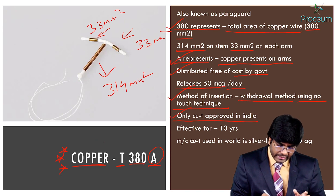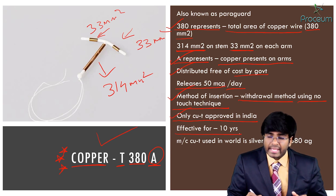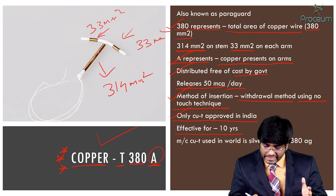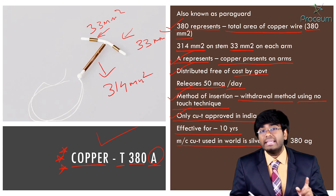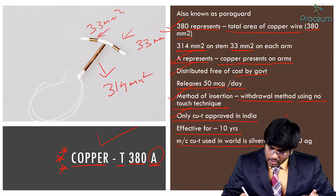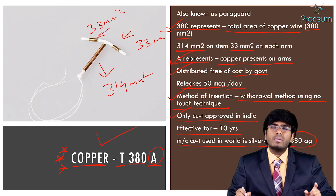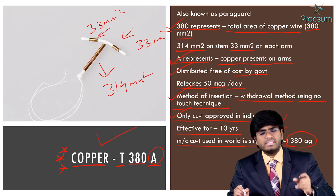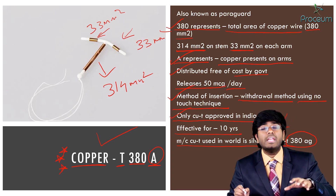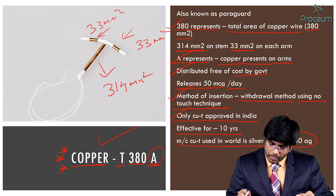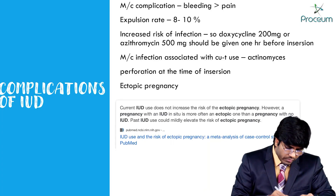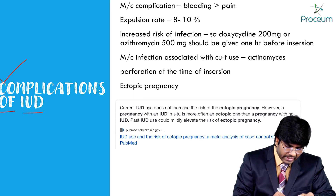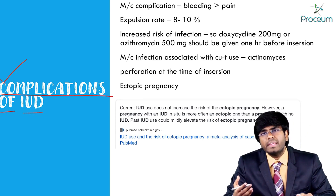The only copper T approved in India is Copper T380A, which is effective for 10 years. However, the most commonly used copper T in the world is the Silver Line Copper T380Ag (Ag for silver). In India, only Copper T380A is available, while Copper T380Ag is used most commonly worldwide.